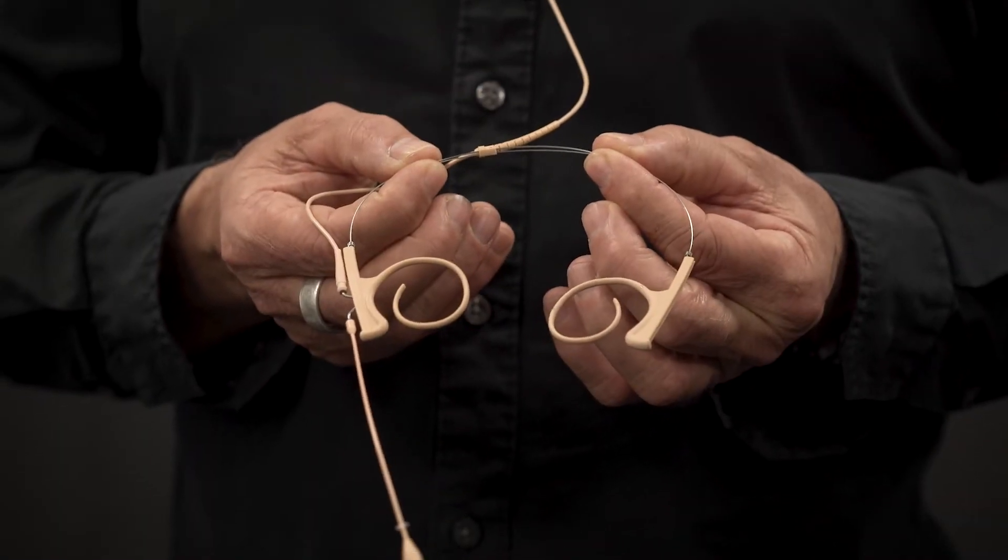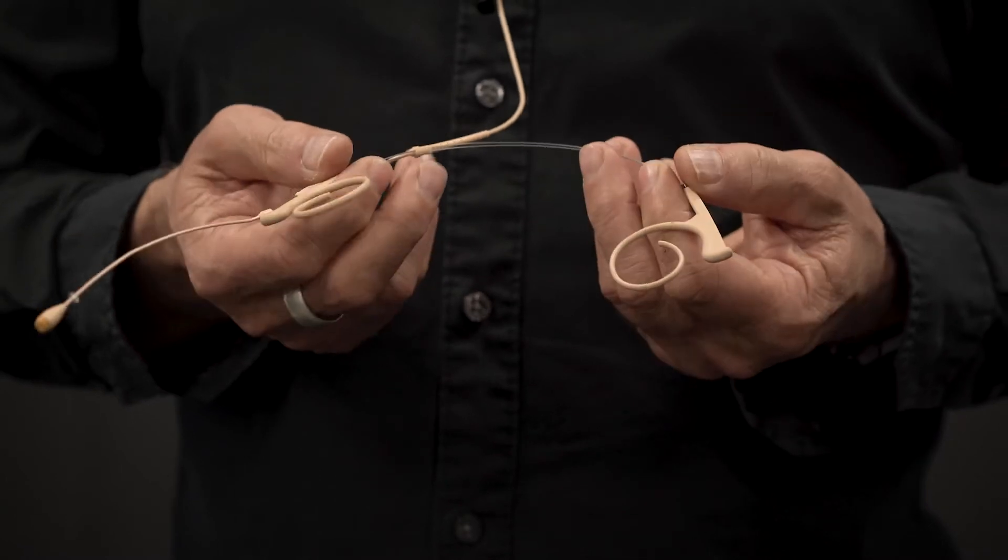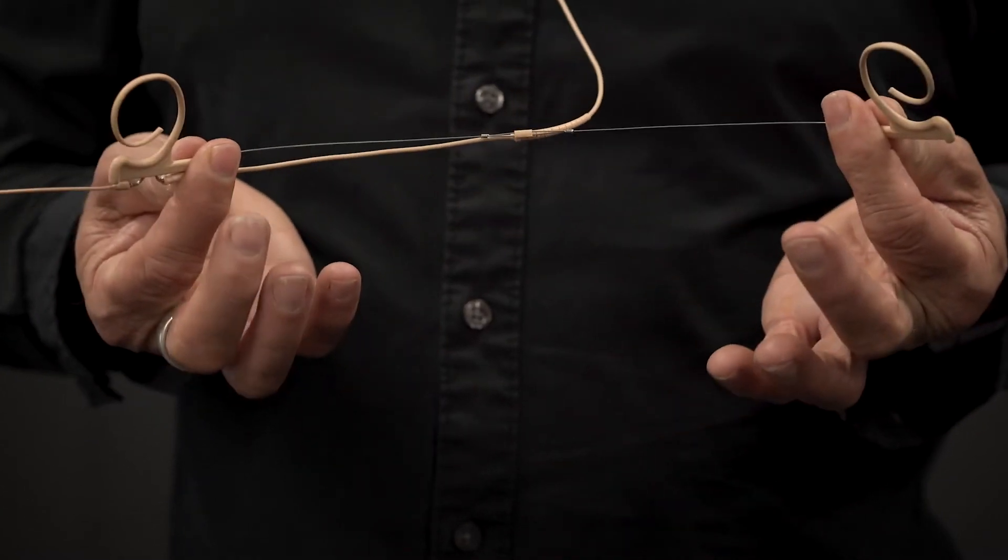You just pull these two strings here to make it small and pull the ear hooks again to make it large again.